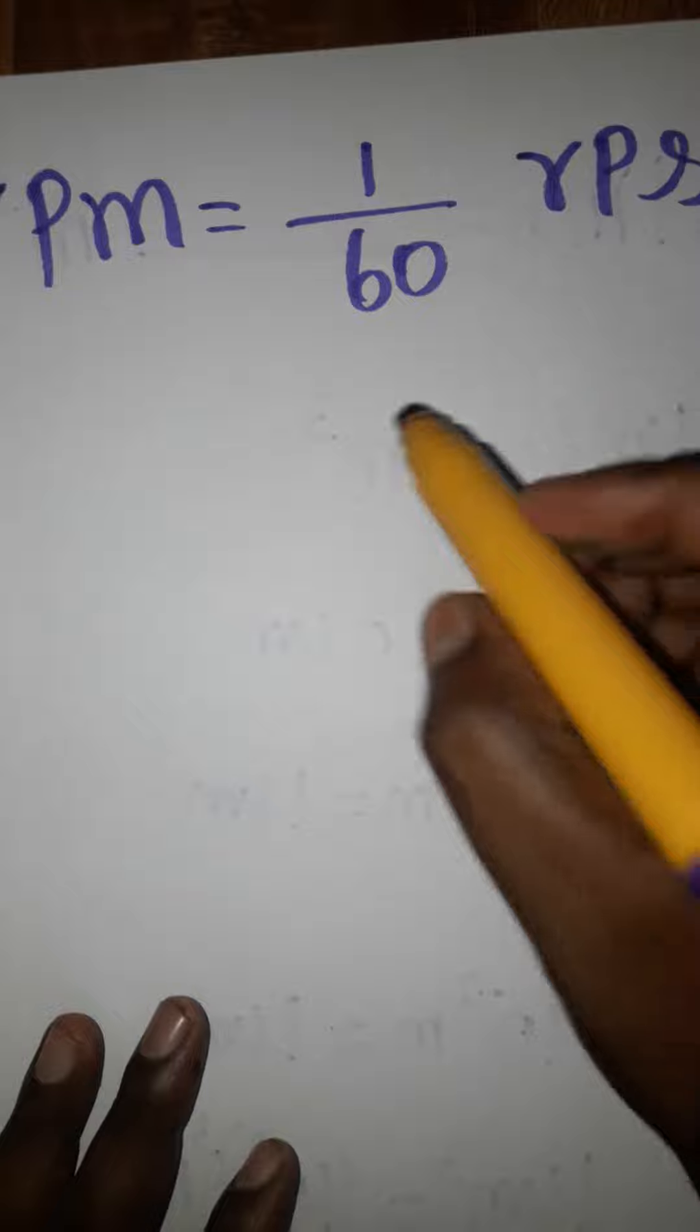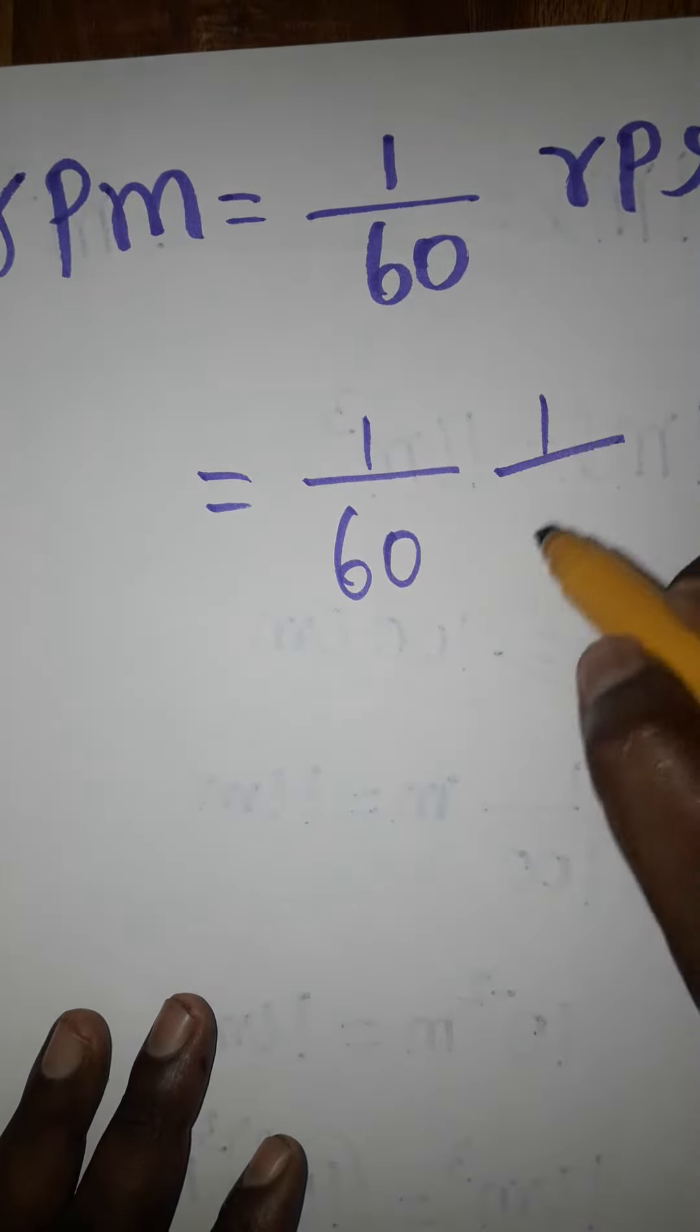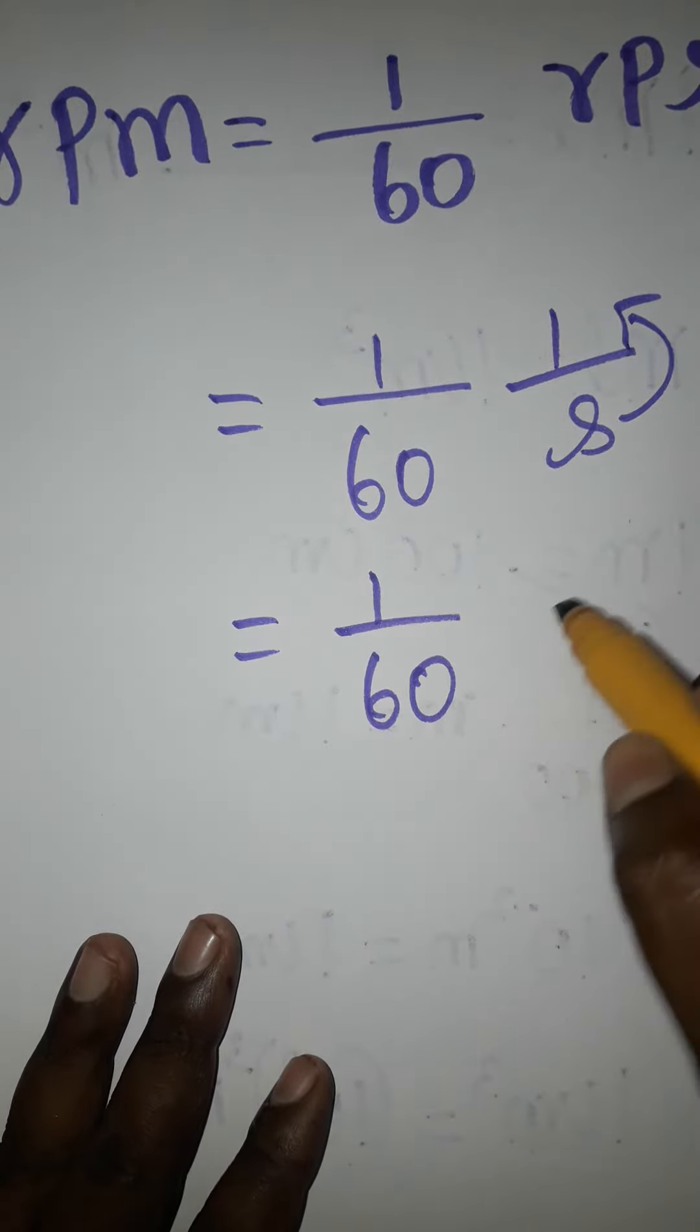Now, rotation per second, the unit of this is going to be second, 1 by second. From the denominator, if you take second as numerator, that is going to be second inverse.